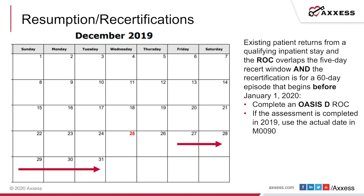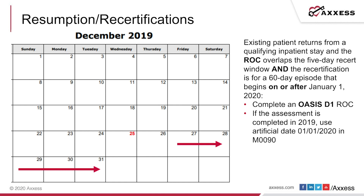If the assessment is completed in 2019, we use the actual date in M90. However, if that same patient's resumption of care overlaps the five-day recert window and the recertification is for a 60-day episode beginning on or after January 1st, 2020, then we're going to do an OASIS D1 resumption of care. And if the assessment is completed in 2019, we still use that 1-1-2020 artificial date in M90.